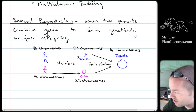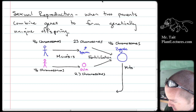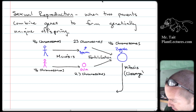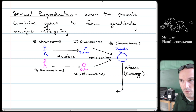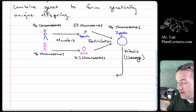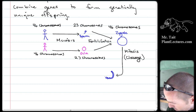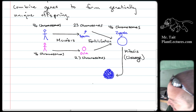The zygote will go through cell divisions — specifically a special type of mitosis called cleavage. In cleavage, cells divide but they don't grow. So the zygote is really big, and it divides into a ball of cells going through a four-cell stage, eight-cell stage, until it forms a ball of cells the same size as the original zygote but with significantly smaller individual cells. This ball of cells is called a blastula.